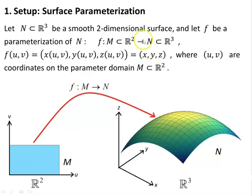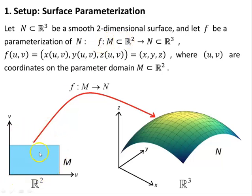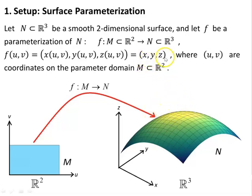So the setup. Let N be contained in R3 — a smooth two-dimensional surface — and let F be a parameterization of N, such that F is a map from M contained in R2 to N contained in R3. So we have two variables in R2, U and V, and three variables in R3: X, Y, Z.